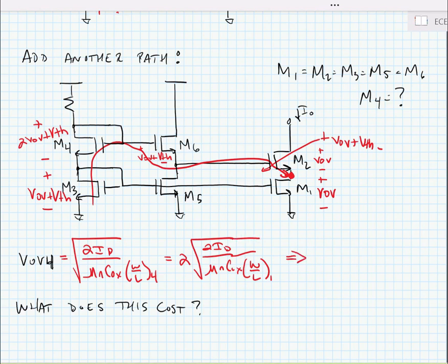Well, we can make this happen by solving these equations, and we can show ultimately that all we need to do is make W over L for M4 equal to one fourth the size of all the other W over L's in the circuit.